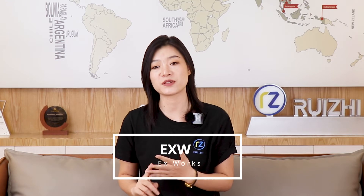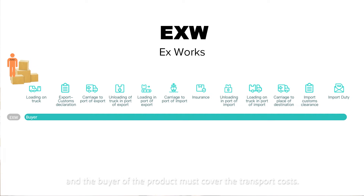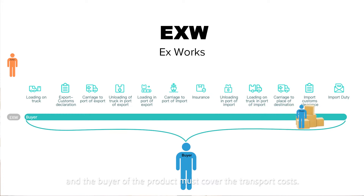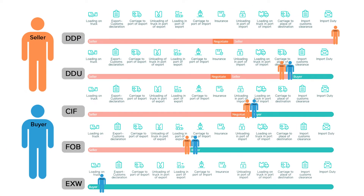Number five, EXW — Ex Works. It describes when a seller makes a product available at a designated location, and the buyer of the product must cover the transport costs. Please check this picture. It's actually the most convenient term for the customer.